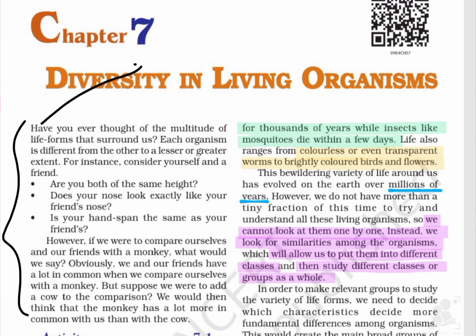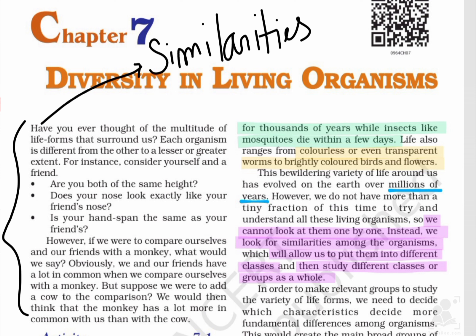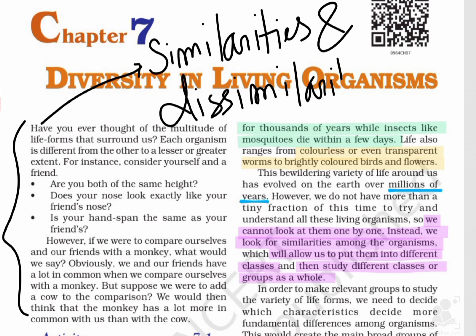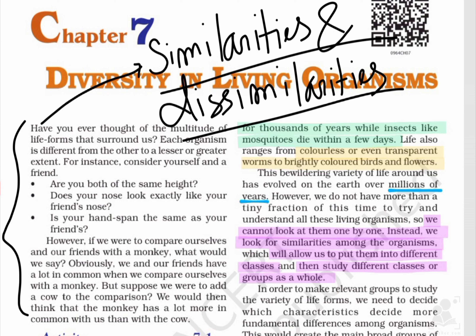This first paragraph is just talking about the similarities and dissimilarities which living organisms share among themselves. An example is given that you and your friend are very different in your height and hand span — talking about dissimilarities. But if we take into consideration a monkey, then you and your friend are much alike as compared to the monkey.